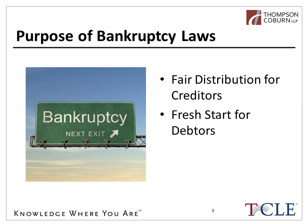It's a lot easier to understand the bankruptcy process when you keep these two basic primary goals in mind. For example, the fair allocation of assets explains why we have an automatic stay — a timeout from collection activity — immediately upon the filing of a bankruptcy. And the discharge that an individual gets upon properly complying with the bankruptcy process, that get-out-of-past-debt-free card, is an example of the fresh start objective at work. In essence, what the bankruptcy code endeavors to do is prevent the demise of an ailing debtor, afford that debtor the opportunity to produce again, in hopes that the debtor and creditors alike will fare better in the long run.